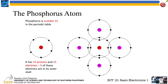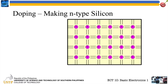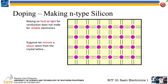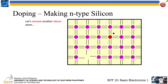Let's observe what happens to our bare silicon material if we replace some silicon atoms with phosphorus atoms. That is what we call doping. Doping means you take one type of material and introduce another atom into it. In this case, we're going to dope our silicon material with phosphorus. Relying on heat for conduction does not make for reliable electronics. Suppose we remove a silicon atom from the crystal lattice and replace it with a phosphorus atom, then remove another silicon and replace with another phosphorus.